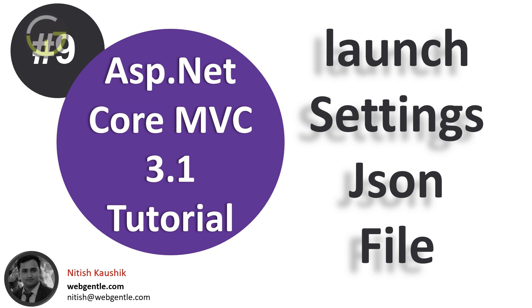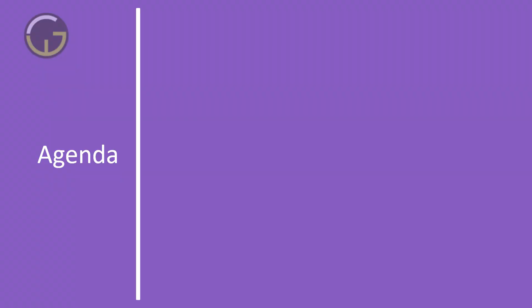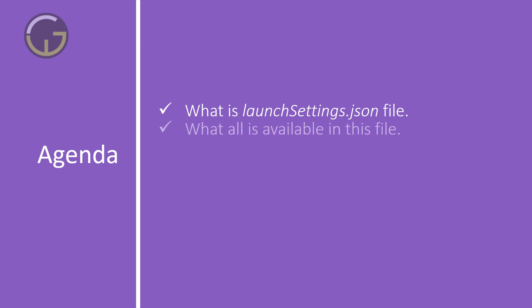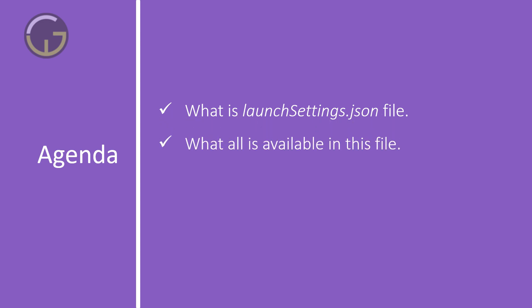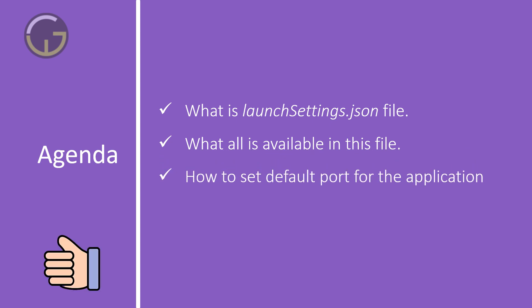Let's have a look at what we are going to learn in this video. We will understand what launchSettings.json is, where this file is located, what properties are available inside it, and how to set the default port for the application. When you run your application on your development machine, a default port is assigned — we'll see where that port is set and whether it can be changed.